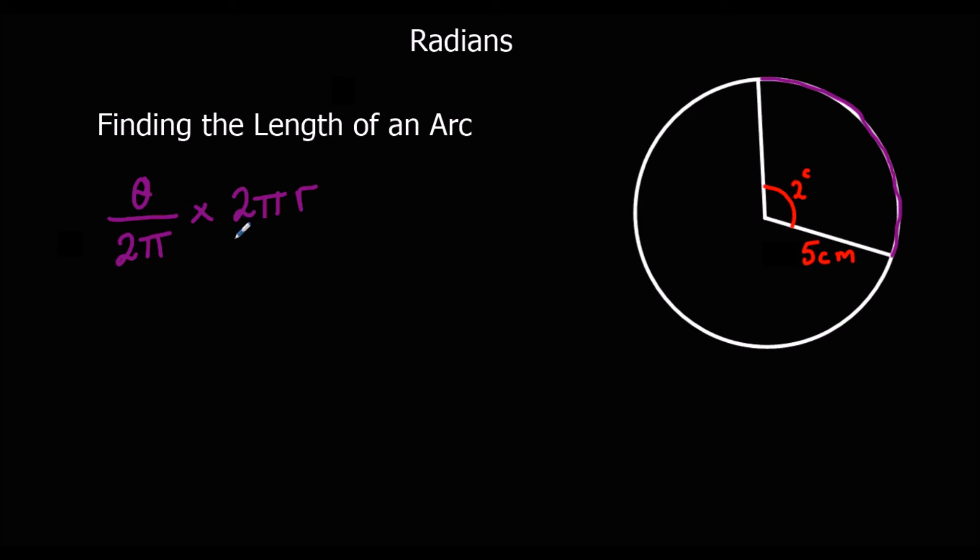So we can see here, the two will cancel and the pi will cancel, which just leaves arc length as theta times r. So in this example, theta is two, r is five, so the arc length is ten centimeters.